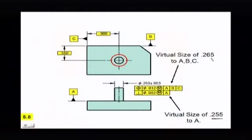So we have two virtual sizes. We have a virtual size to ABC of 265, and we have a virtual size of 255 to A.